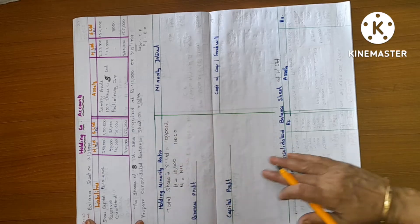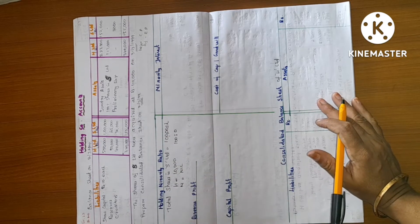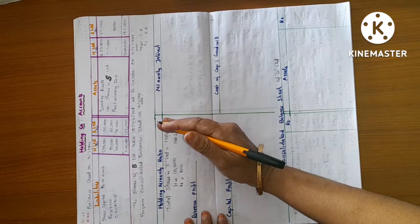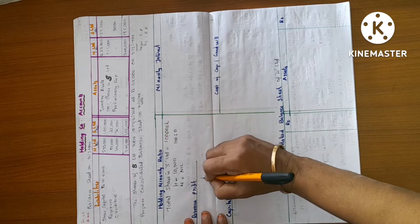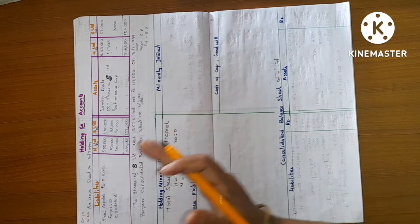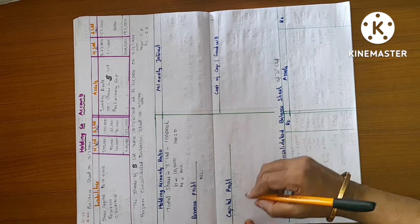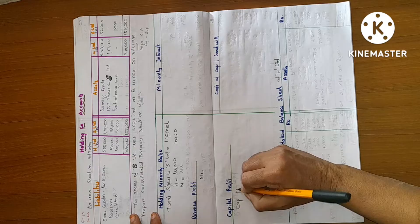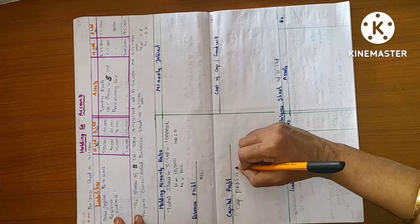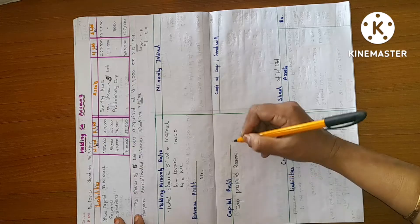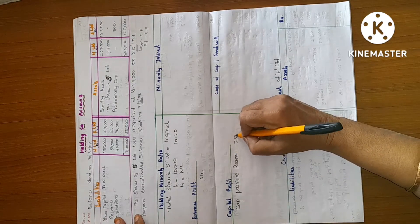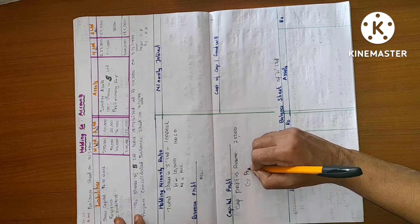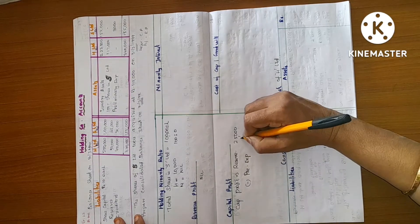Amount of benefits for the holding company. Capital profit and revenue profit. Capital profit: the expenses are less than 3,000.